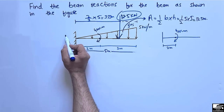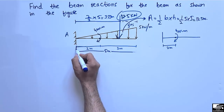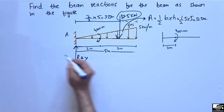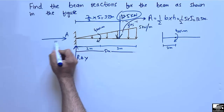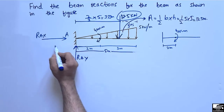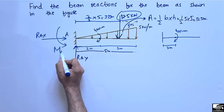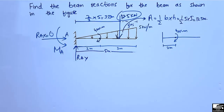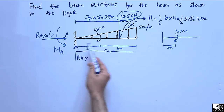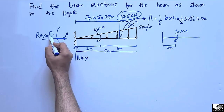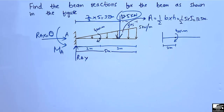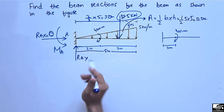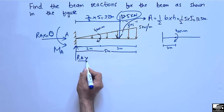This is the fixed support A, which has a vertical reaction RAy and a horizontal reaction RAx, and also a moment at point A. The horizontal component RAx will be equal to zero because there is no horizontal load acting on this beam. There are only vertical loads and a moment acting on the beam.